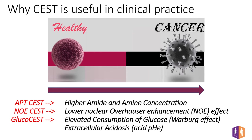Cancer cells are characterized by an alteration in glucose metabolism called the Warburg effect — they demand and consume glucose much faster than healthy cells. The glucoCEST method is based on measuring the absorption of unlabeled glucose by chemical exchange of labile protons between hydroxyl groups and water. Additionally, specific tumor cell mechanisms cause extracellular acidosis, leading to an average extracellular pH of 6.5 to 7. The acidosis method can quantitatively measure acidity using iopamidol, an iodine-based contrast agent approved by the FDA for CT clinical examinations.